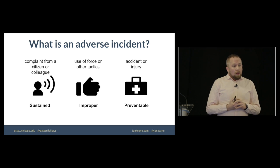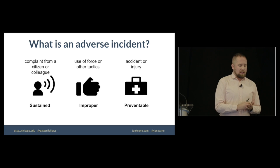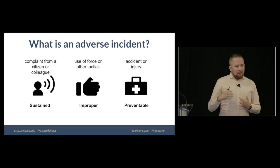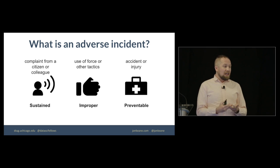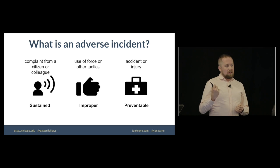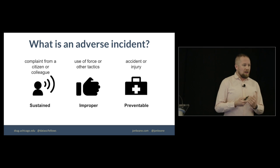So what is an adverse incident? The way that we defined it for this model was it was any complaint from a citizen or a colleague that was sustained, and this included internal disciplinary processes. Any use of force or another type of tactic, like a pursuit that was deemed through an investigation to be improper. And finally, some accidents and injuries that were deemed to be preventable. So this is like a car wreck in a chase that was due to an officer driving poorly.